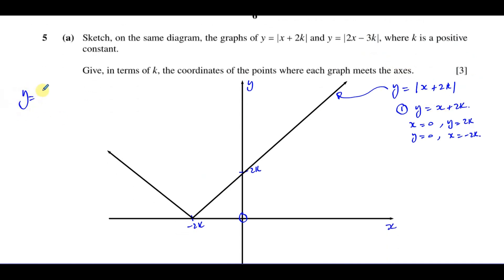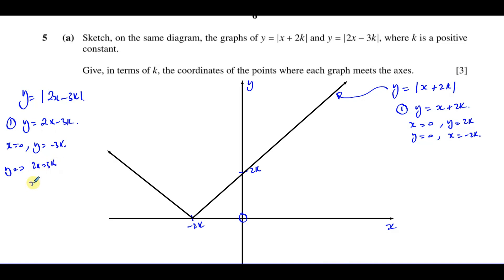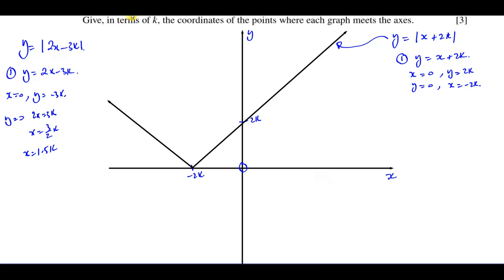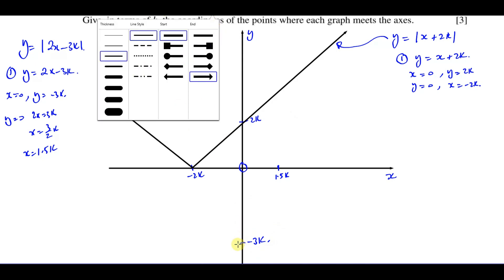Now if we draw y equals the modulus of 2x minus 3k — imagining it without the modulus sign as y equals 2x minus 3k — when x equals 0, y is going to be negative 3k. When y equals 0, we get 2x equals 3k, so x equals 3 over 2 times k, which is 1.5k. This is going to hit the x-axis at 1.5k and the y-axis at minus 3k. It's going to have a steeper gradient than the other graph.